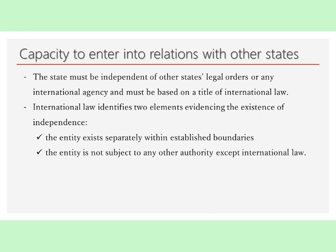Capacity to Enter into Relations with Other States: Although the new entity may have a government capable of acting on its behalf, in order for its claim to be a state to succeed, the entity itself must be capable of entering into relations with other states. The capacity of an entity to enter into relations with other states derives from the control the government exercises over a given territory, which in turn is based on the actual independence of that state. The state must be independent of other states' legal orders or any international agency, and must be based on a title of international law. International law identifies two elements evidencing the existence of independence. The first is that the entity exists separately within established boundaries, emphasizing the link between territory, population, government and independence. The second is that the entity is not subject to any other authority except international law.